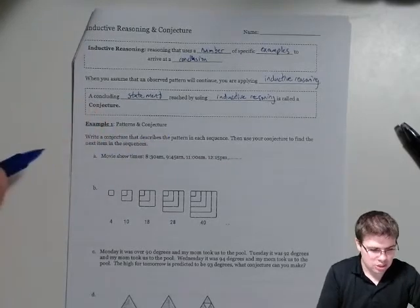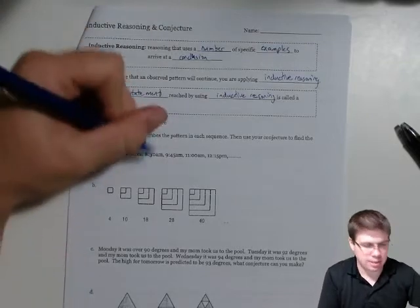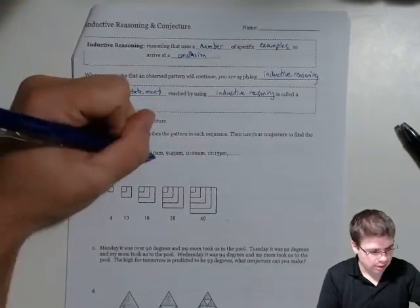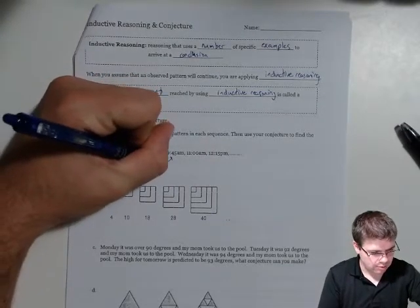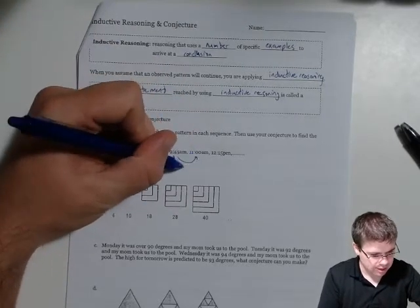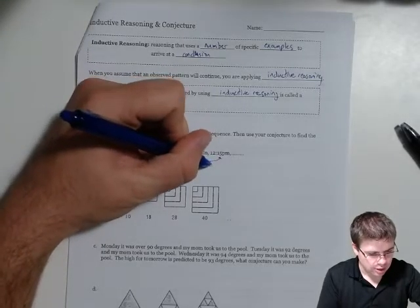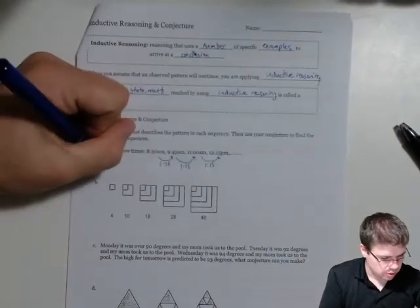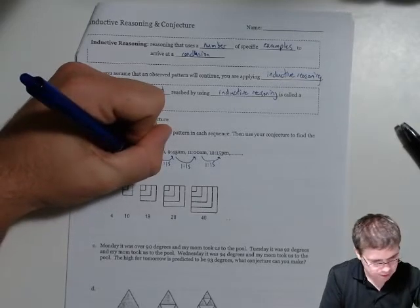Write a conjecture that describes the pattern in each sequence, then use your conjecture to find the next item in the sequence. So here we're looking at movie showtimes. We've got showtime at 8:30, 9:45, and so on. Look for the pattern here. We can see that the time change from there to there is one hour and 15 minutes, and then from 9:45 to 11 that's another one hour and 15, and another one hour and 15.